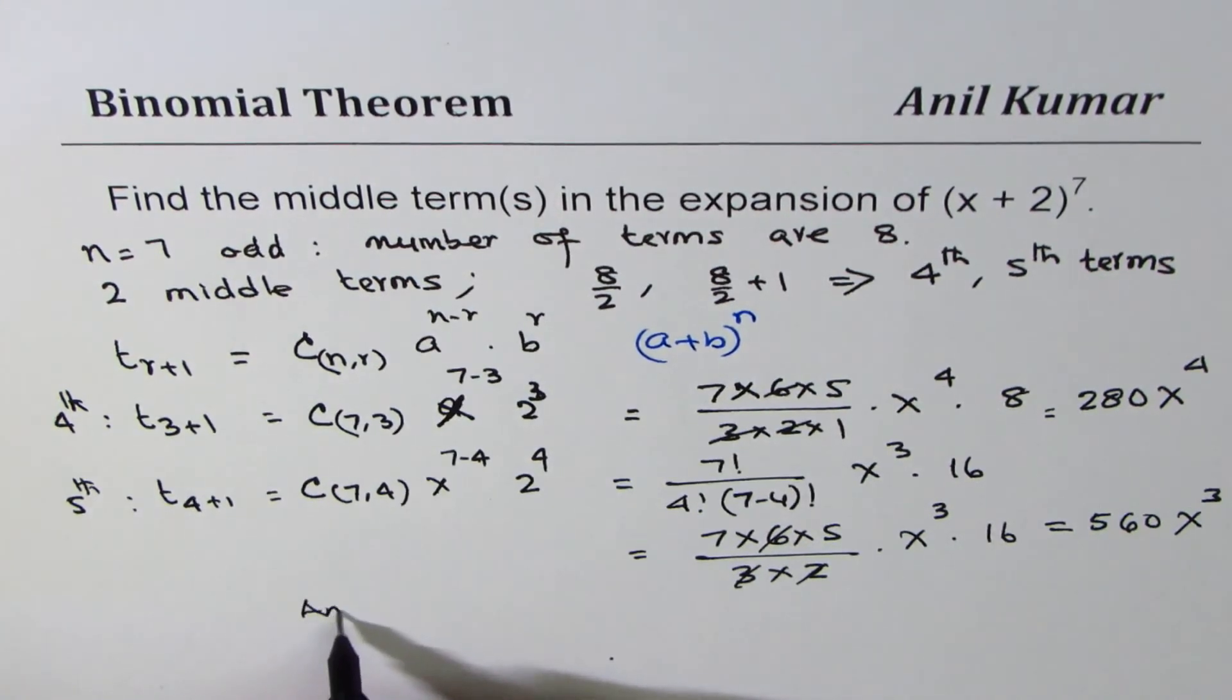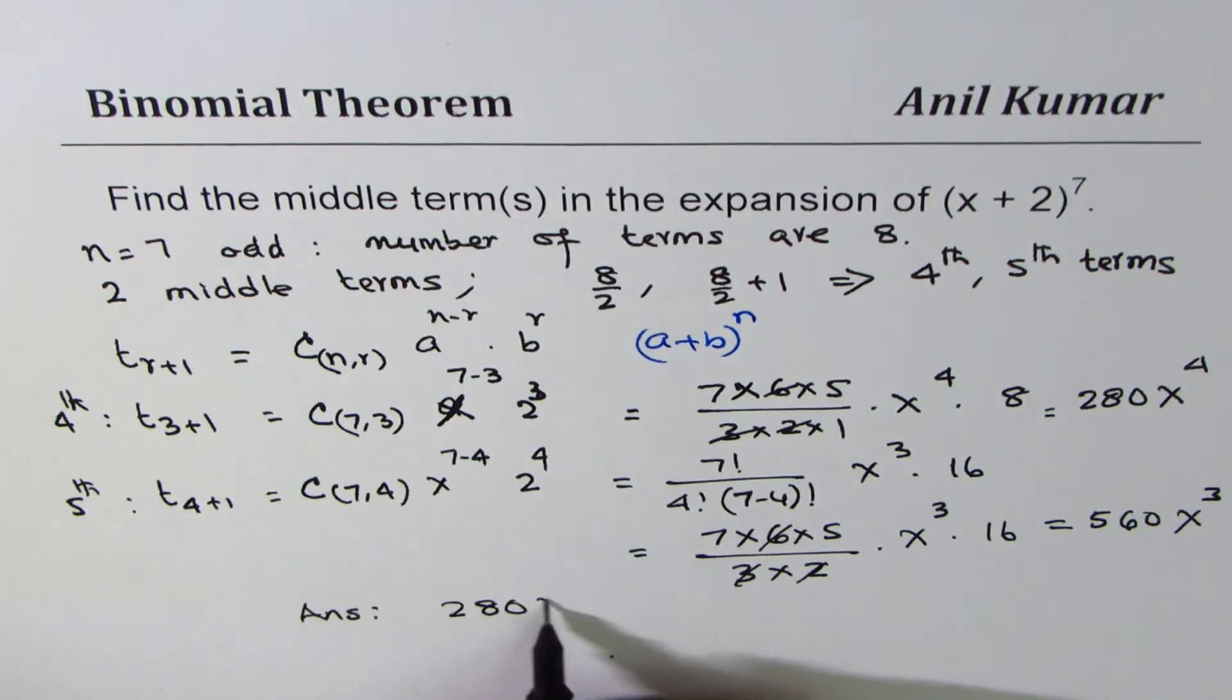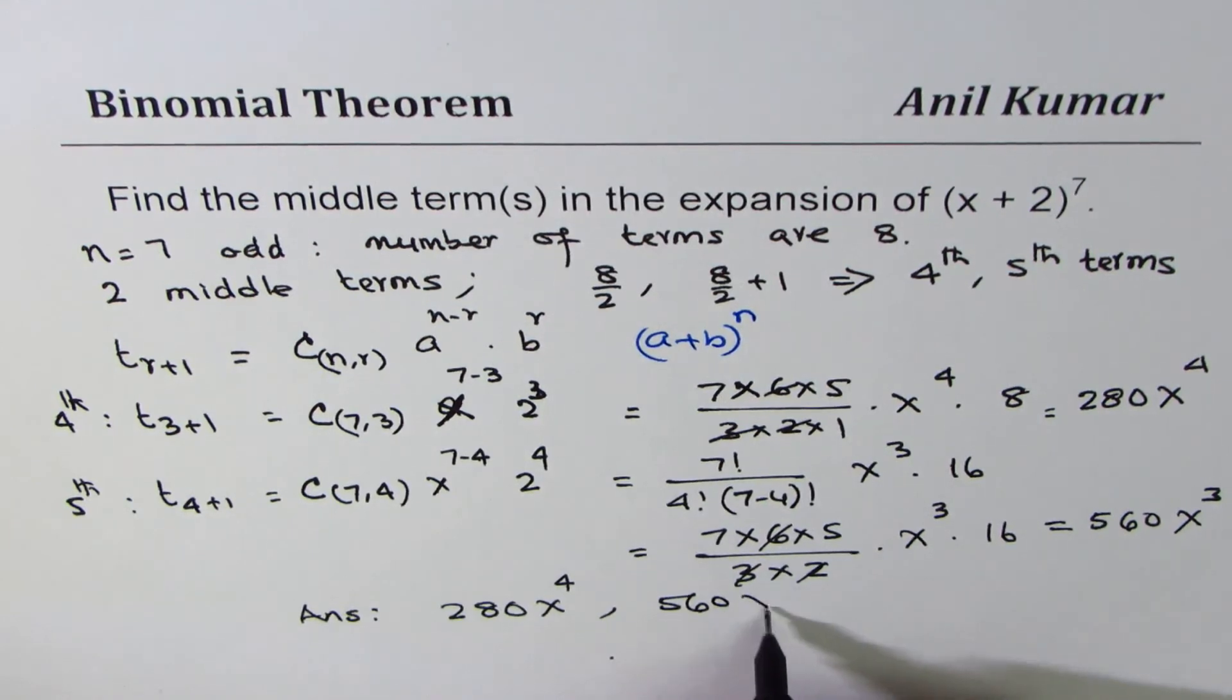And therefore our answer is that the middle terms are 280X^4 and 560X^3.